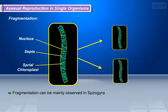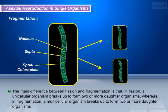Fragmentation can be mainly observed in Spirogyra. The main difference between fission and fragmentation is that in fission, a unicellular organism breaks up to form two or more daughter organisms, whereas in fragmentation, a multicellular organism breaks up to form two or more daughter organisms.